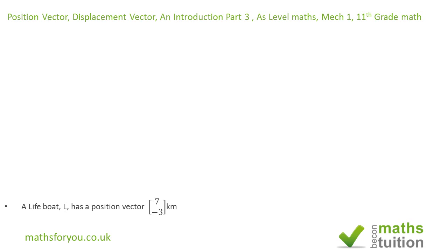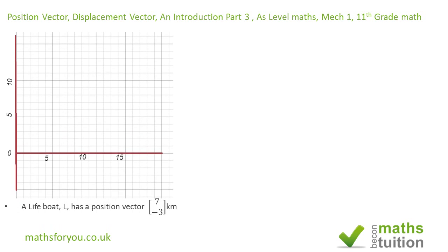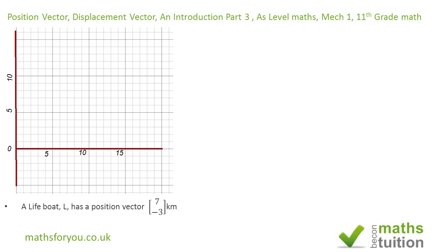We're told that a lifeboat L has a position vector (7, -3). In the actual question this is not there, I'm only using this to help clarify what I'm doing here and to check our results by calculation.